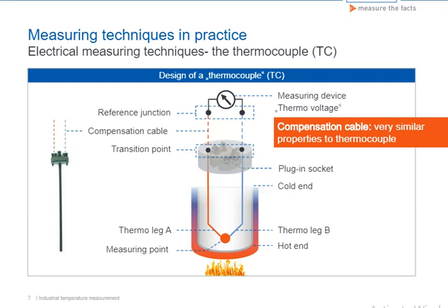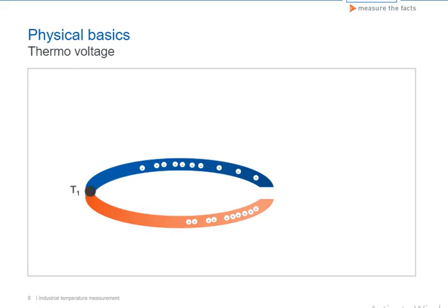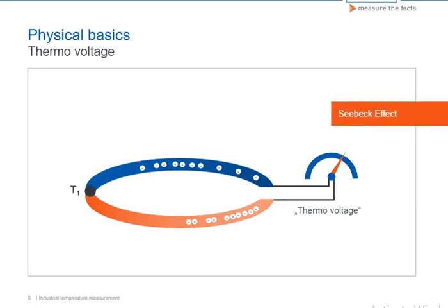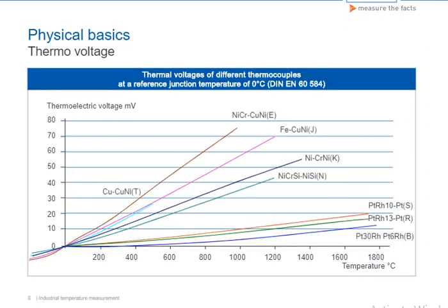An external current source is not necessary for this measurement. In an electrical conductor exposed to a temperature gradient, the electrical charges shift along the gradient, an effect known as thermal diffusion. Macroscopically measurable effects occur at the combination of differing materials. If the two conductors are joined at one end, the open end connected to a voltmeter, and the transition points heated to different temperatures, thermo-electricity appears as a thermo-voltage. This physical phenomenon is known as the Seebeck effect. As you can see in the diagram, in most cases the magnitude of the thermo-voltage grows linearly with the increasing temperature difference between measuring point and reference junction.